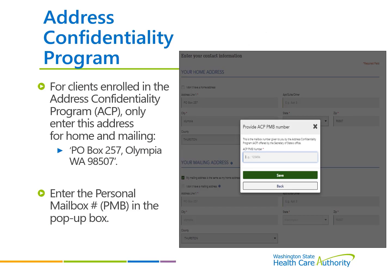For clients enrolled in the Address Confidentiality Program (ACP), enter PO Box 257 on address line 1, and Olympia, WA 98507 for the city, state, and zip code. Once entered, a pop-up box will appear asking for the client's personal mailbox number or PMB. Enter their PMB number in this pop-up box. Do not enter the PMB number anywhere else.